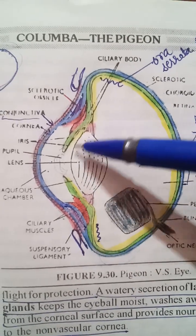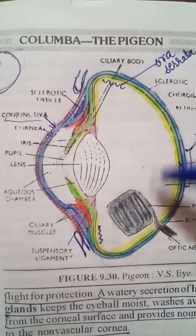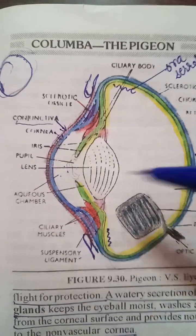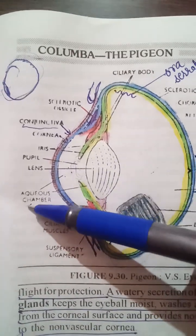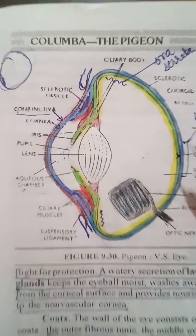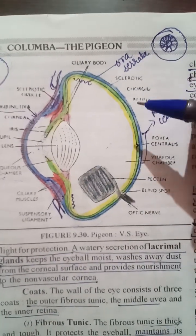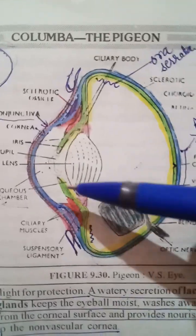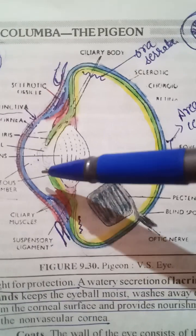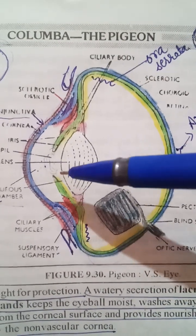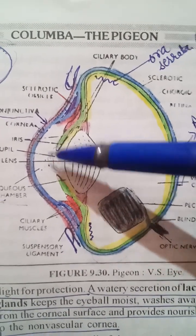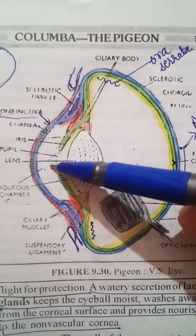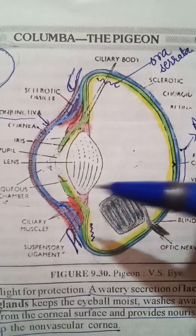Because of the lens, the chamber of the eye is divided into two portions: the anterior chamber and the posterior chamber. The anterior chamber is termed the aqueous chamber and the posterior is termed the vitreous chamber. The aqueous chamber is filled with a watery, clear, and transparent fluid termed aqueous humor.